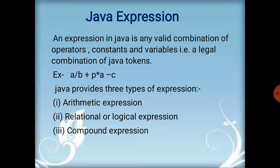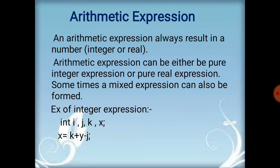Java provides three types of expressions: arithmetic expressions, relational or logical expressions, and compound expressions. An arithmetic expression always results in a number, maybe integer or real. A logical expression always results in a logical value, either true or false. An arithmetic expression can be a pure integer expression or a pure real expression. Integer means whole number and real means the fractional part. Sometimes the expression is a mixed expression, formed by both real and integer variables.